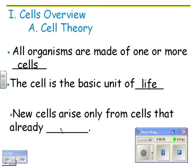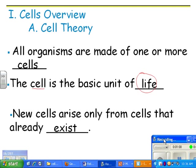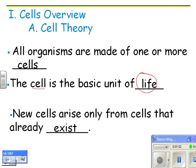New cells arise only from cells that already exist, which sort of begs the question — where did the first one come from? But for now, we're just going to say that all the cells on the planet right now came from cells that were already around.